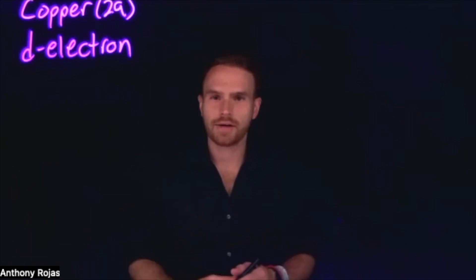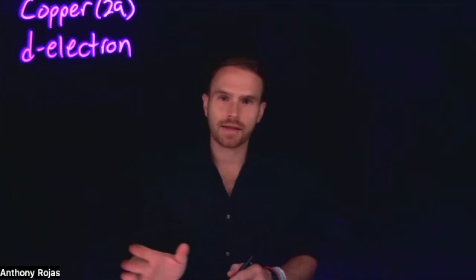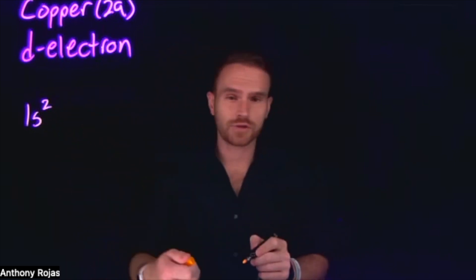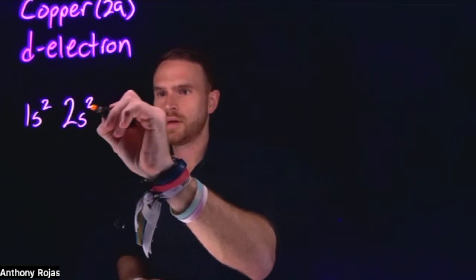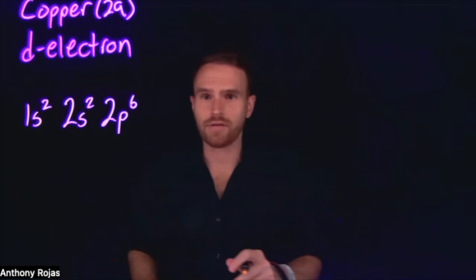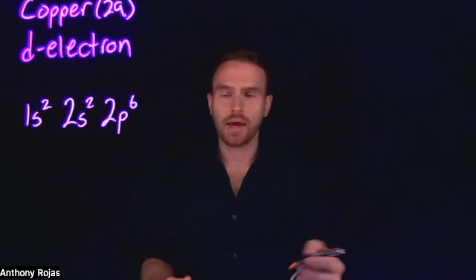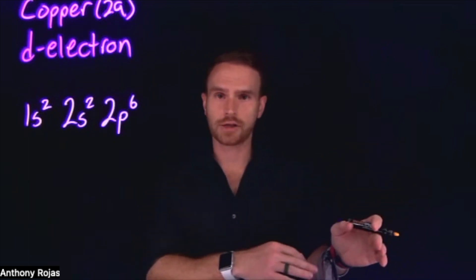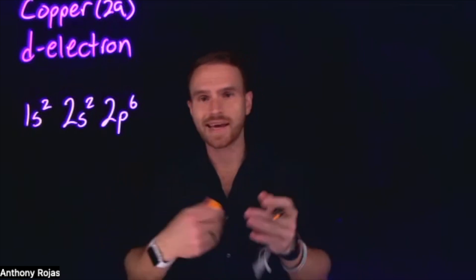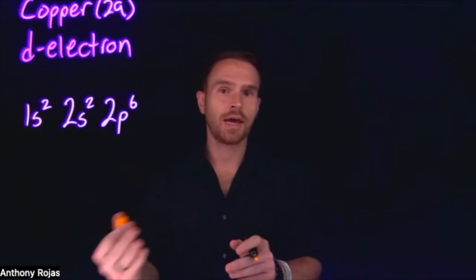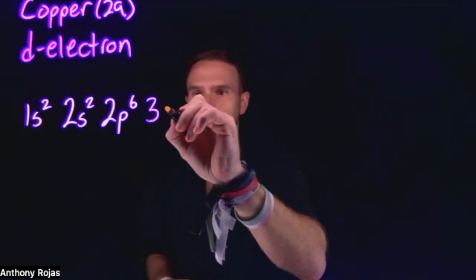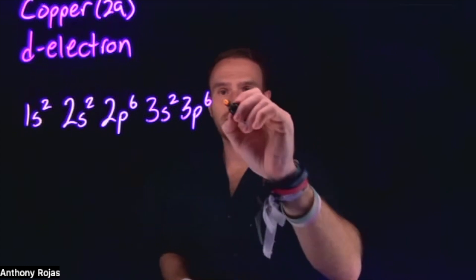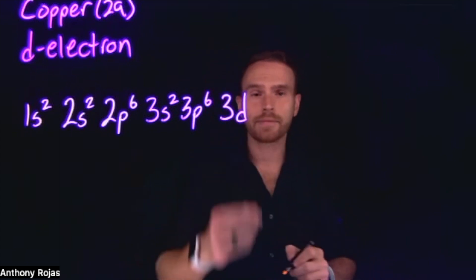Copper is element number 29 on the periodic table. The first thing we need to do is write out the complete electron configuration. We always begin with 1s², then 2s² followed by 2p⁶ gets us through the next shell. Then we move to the n=3 state. As an inorganic chemist, I always keep the n=3 electrons together before moving on to the n=4 electrons. So the next step is 3s², followed by 3p⁶.